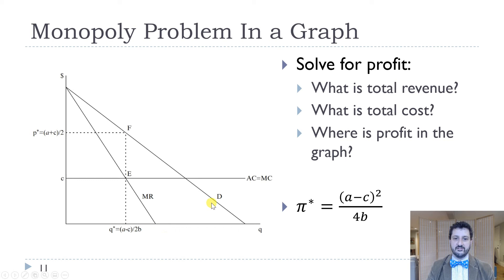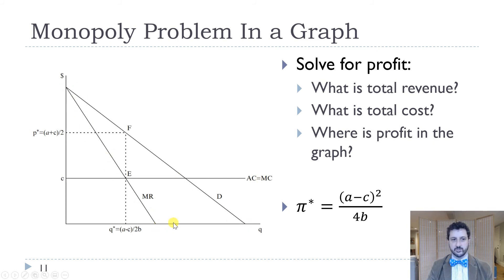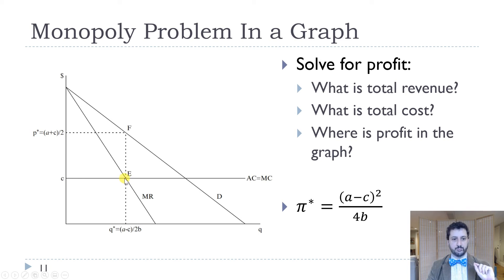Here's the picture of the monopoly problem. We have our constant marginal cost equal to average cost, our demand function, and our marginal revenue function — for linear demand, marginal revenue always has the same intercept but a slope twice as steep. Marginal revenue equals marginal cost gives us our profit-maximizing quantity. When graphing the profit-maximizing price, you go up to the demand curve and then over — that's P star equals (A plus C) over 2. The quantity is Q star equals (A minus C) over 2B.